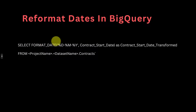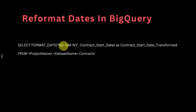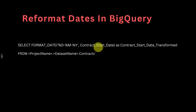FORMAT_DATE, open parentheses, single quotation, then the format string. If we want day-month-year, we write: percentage sign d, hyphen, percentage sign m, hyphen, percentage sign Y, and another single quotation, followed by a comma, and then the name of the column — which in this case is, for example, contract_start_date — then close parentheses.